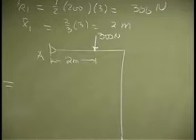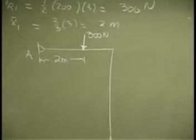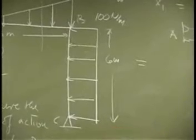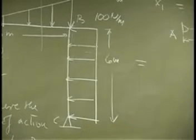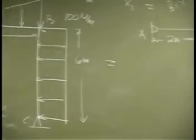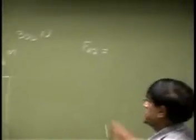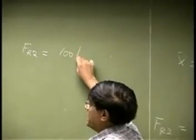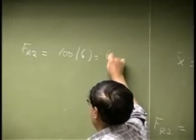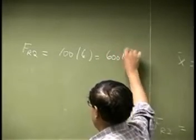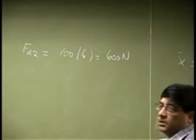Then, same thing with the second one. That is a rectangle, so FR2. The intensity is 100, acting on the length of 6 meters, so the actual magnitude becomes 600 Newtons.